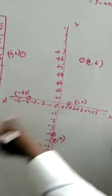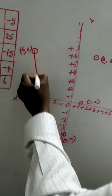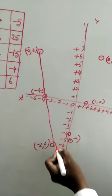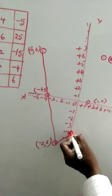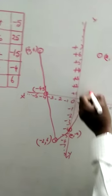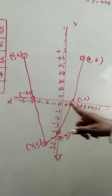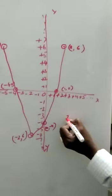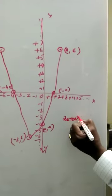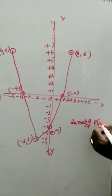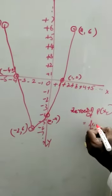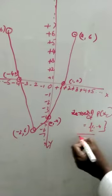Now join all these points to form the curve. Where the curve intersects the x-axis, that is the zeros — already you know this. Join the points smoothly. The curve crosses the x-axis at x equals 1 and x equals minus 4. So the zeros of P of x are 1 and minus 4.